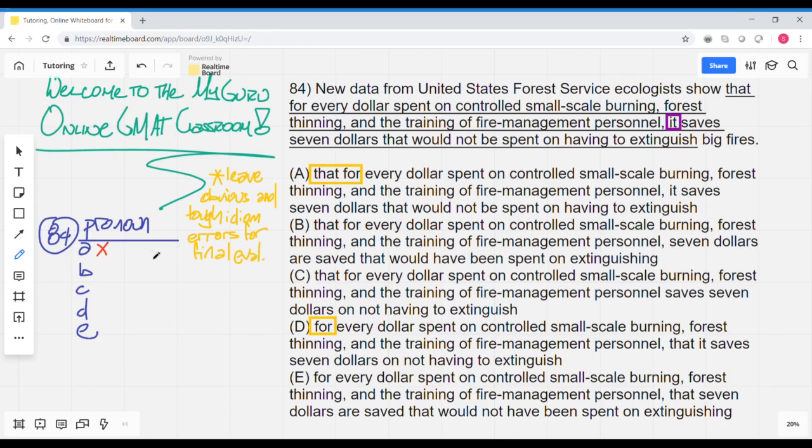That for every dollar spent on controlled small-scale burning, forest thinning, and the training of fire management personnel, saves $7 on not having to extinguish. Well, the pronoun's not wrong. So we'll hold on to that for now.